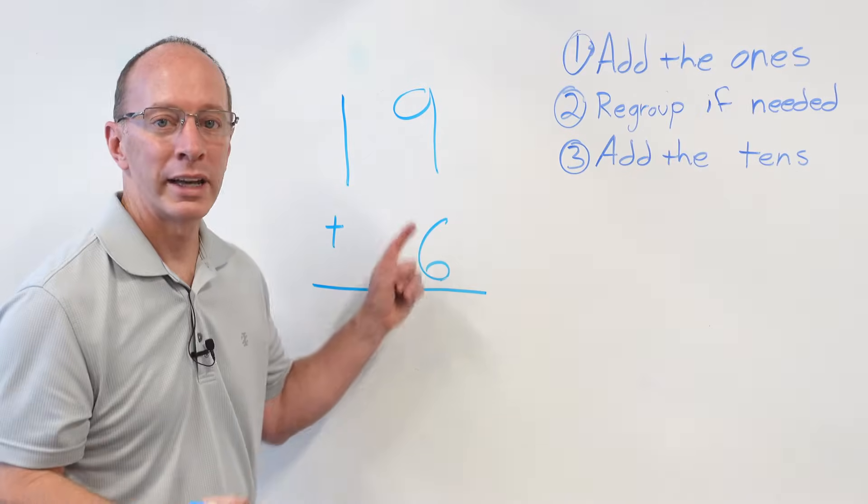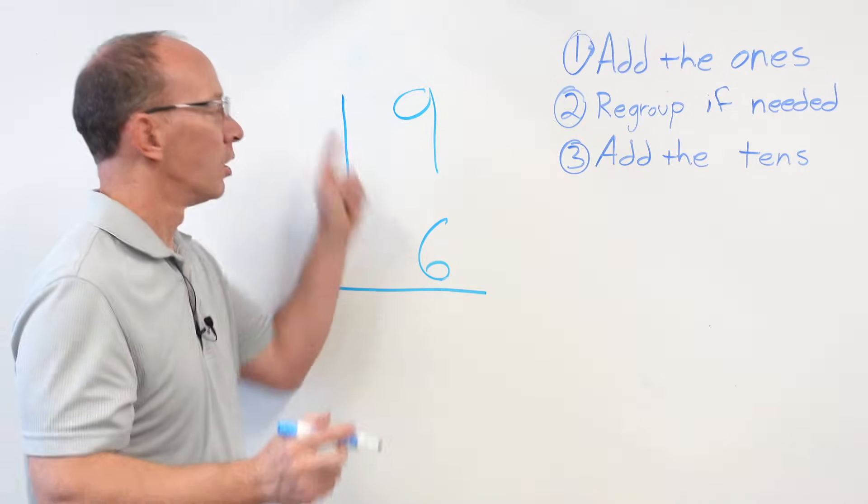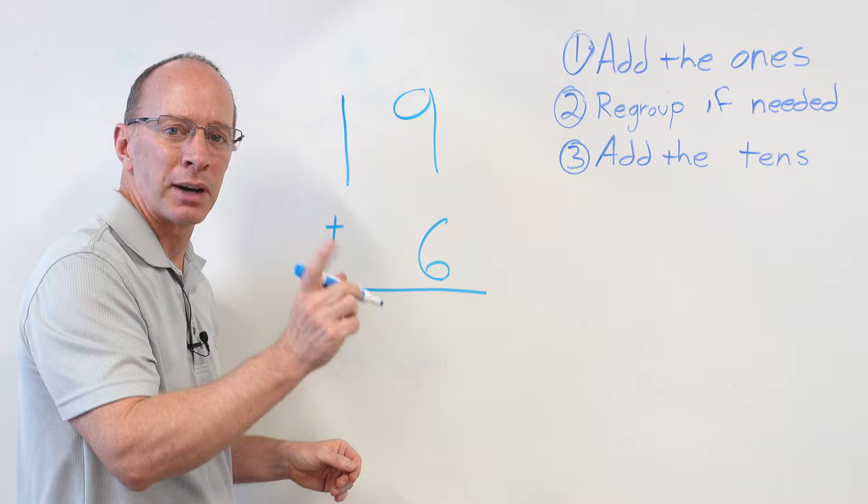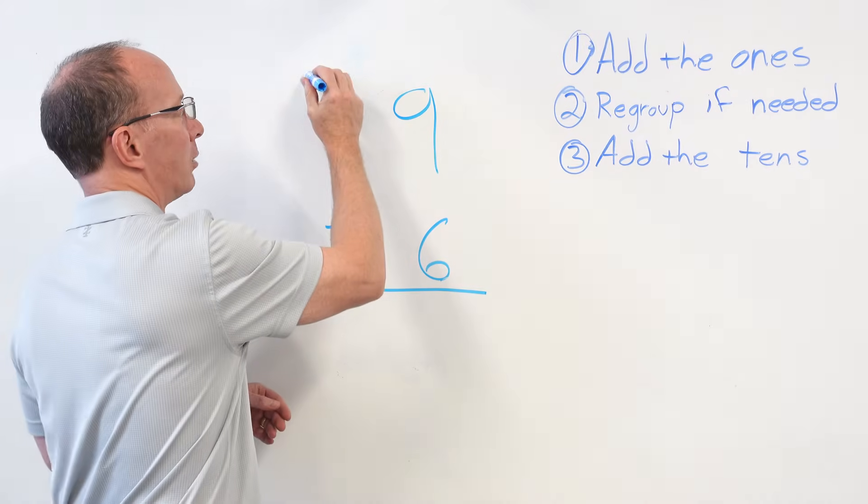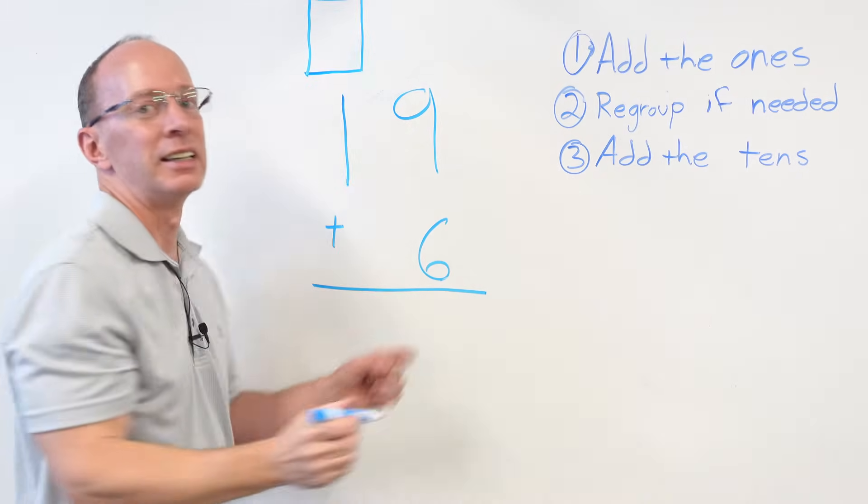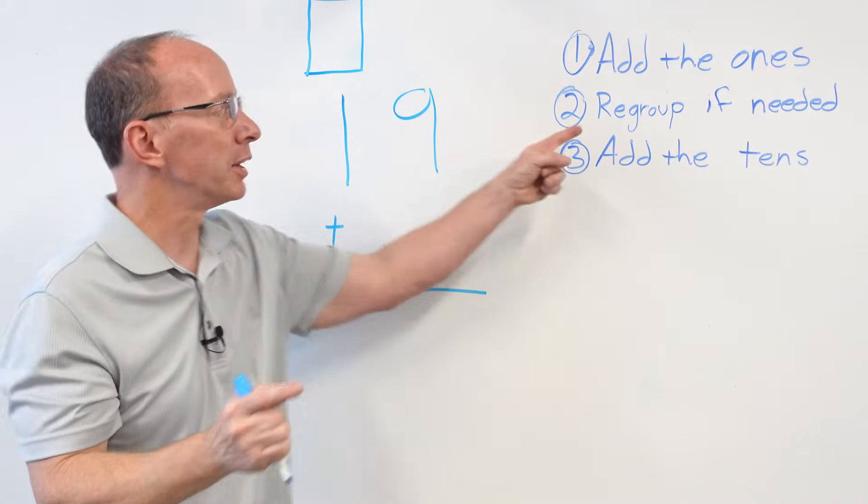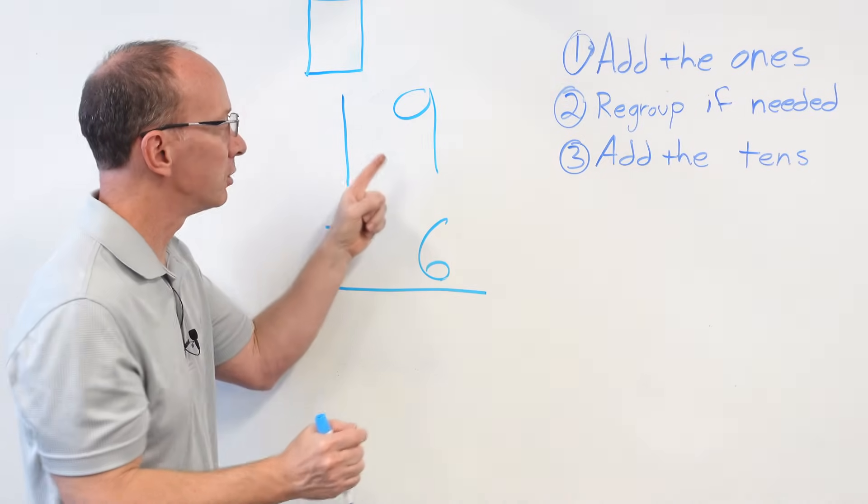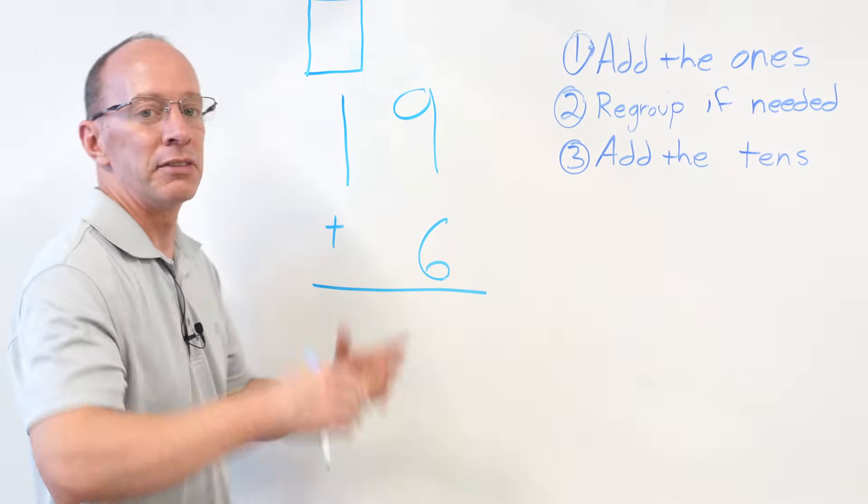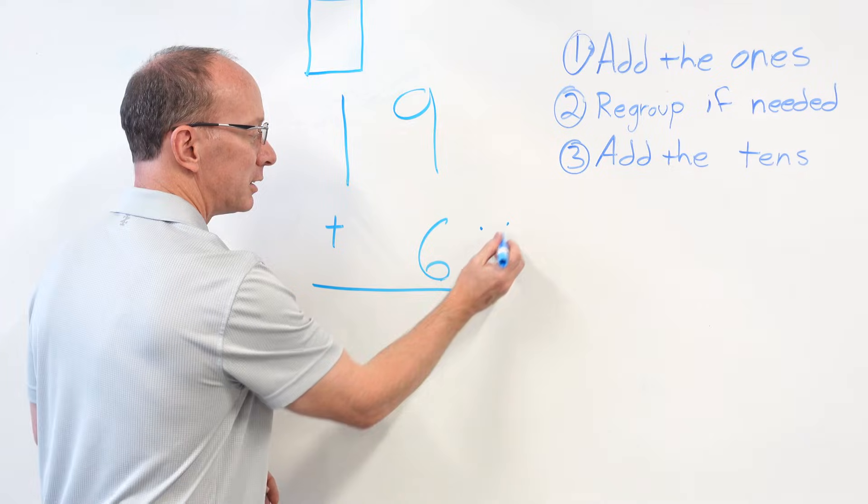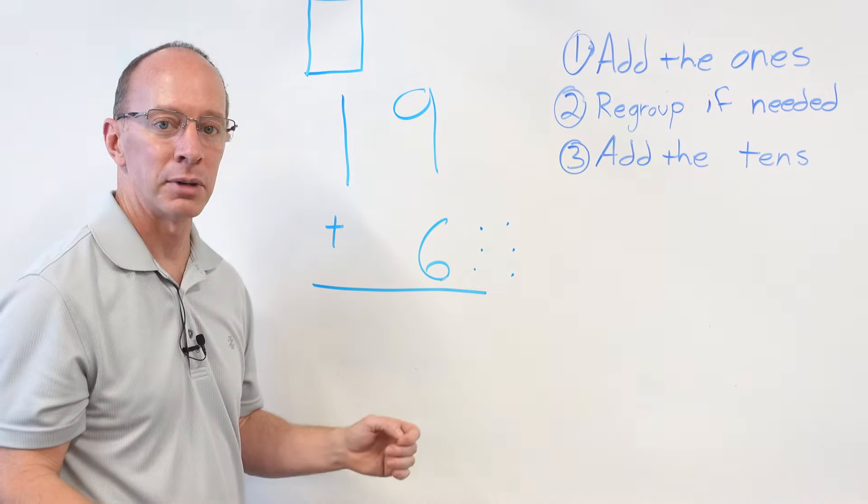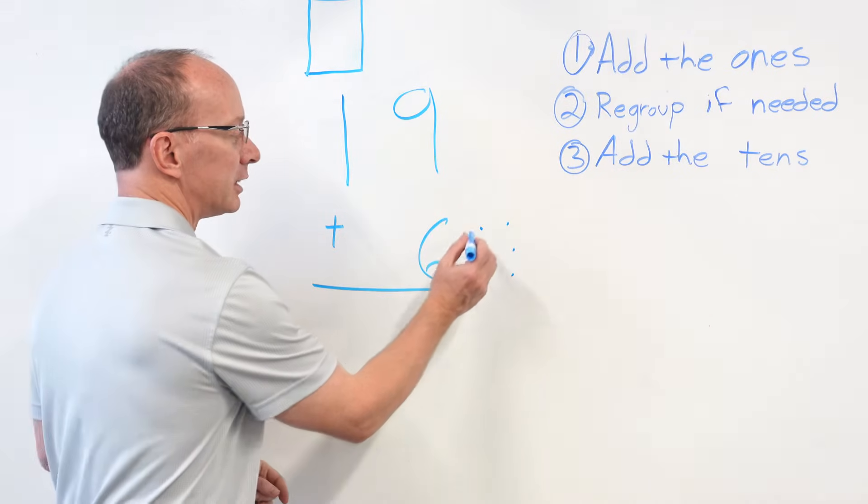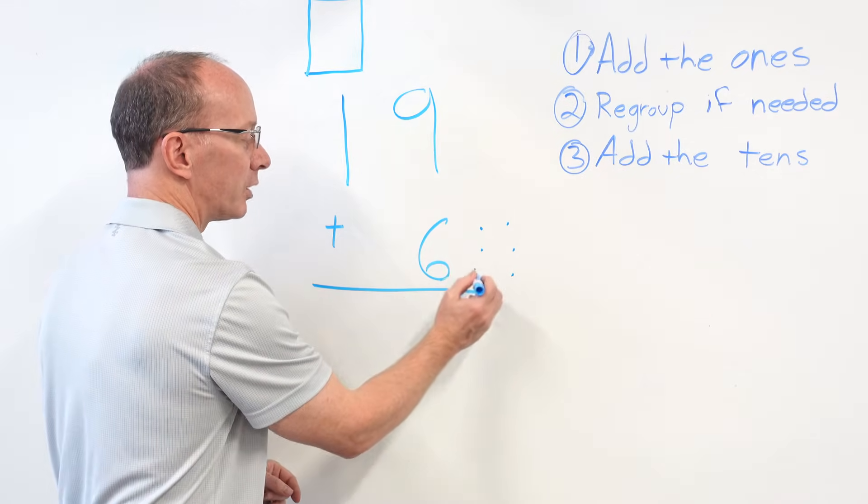Boom! Okay, we got 19 plus 6. Got to put the box up there. Now, you don't always have to put the box. And my next problem, I'm not going to use the box. But it's just a helper. Just kind of reminds you, oh, that's right. If I have to regroup, I have to put that number right there in the tens place. Okay, let's do this problem. 9 plus 6. If you don't know how to do that, you can make some dots right down here in your smallest number. Try to always add the biggest numbers first. Let's try it. 9, 10, 11, 12, 13, 14, 15.